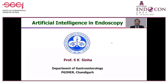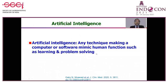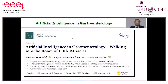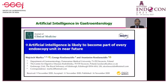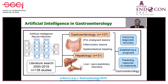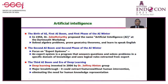Artificial intelligence basically refers to any technique which makes a computer or software mimic human functions such as learning and problem solving. If you go through different journals you come across editorials which say that artificial intelligence in gastroenterology is walking into the room with little miracles. This is because AI is likely to become part of every endoscopy unit in the very near future. In the last one year there are 107 papers on AI in gastroenterology on PubMed.